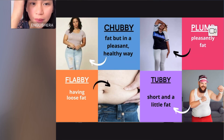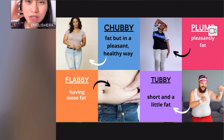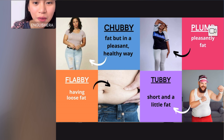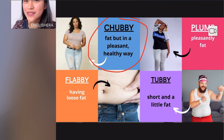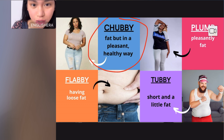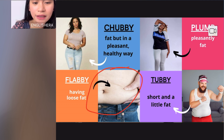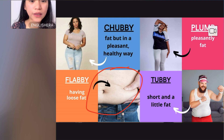Let's start with basic English words to describe someone who is heavy. The first word is 'chubby.' If you don't want to offend someone, instead of saying that they are fat, you can also say that they are chubby. If someone has loose fat, we call that person 'flabby.'